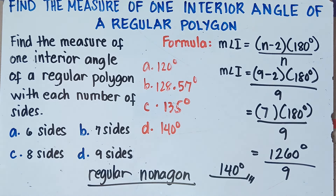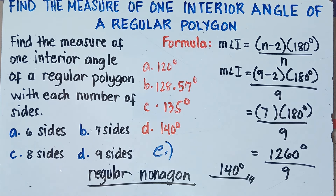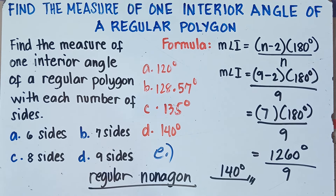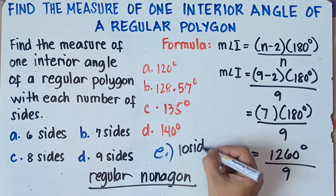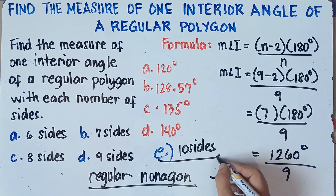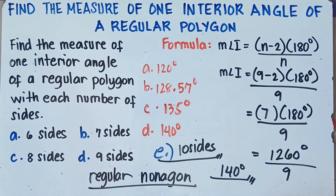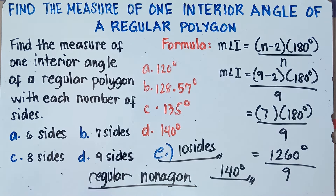That's your set for letters A to D. Now try letter E on your own and put your answer in the comment section below. Let me check if you really understand today's topic on finding the measure of one interior angle. If you are given 10 sides, what would be the measure of each interior angle of a regular polygon with 10 sides? Don't forget to like, share, and subscribe — share it with your friends and classmates so we can help more students.